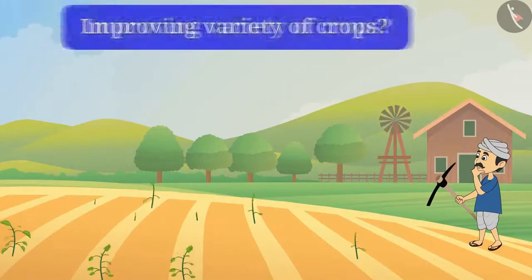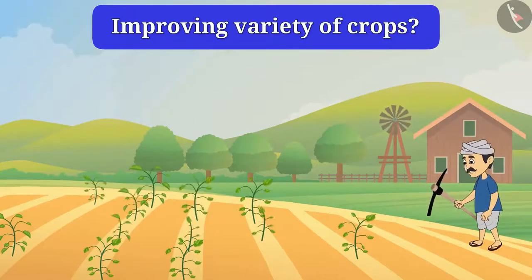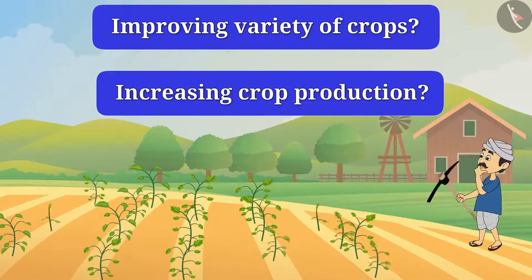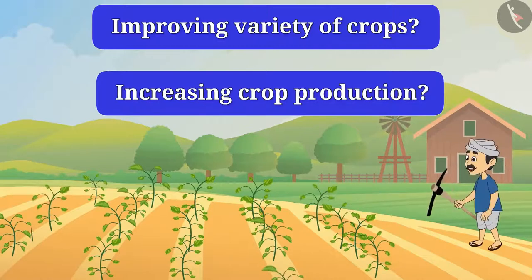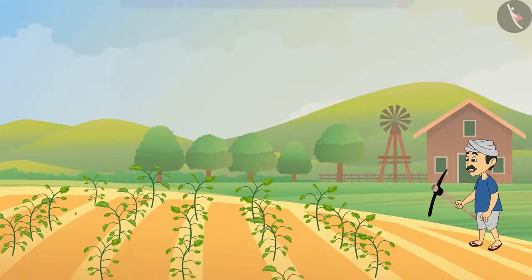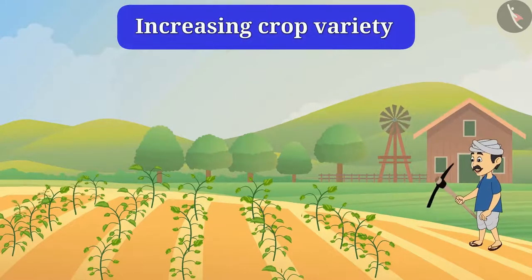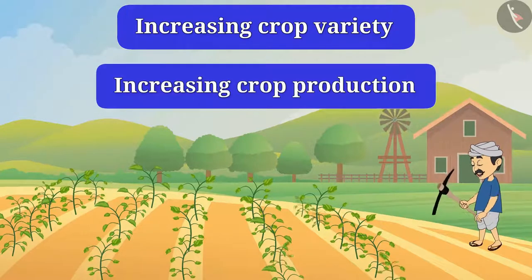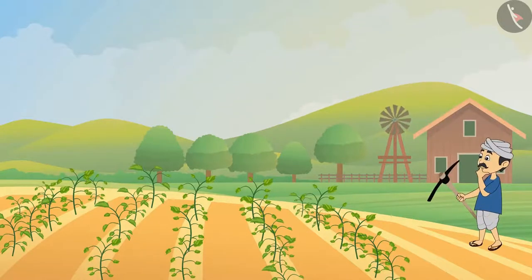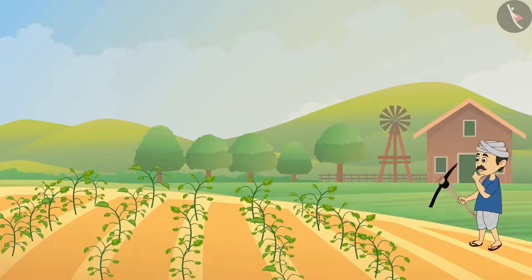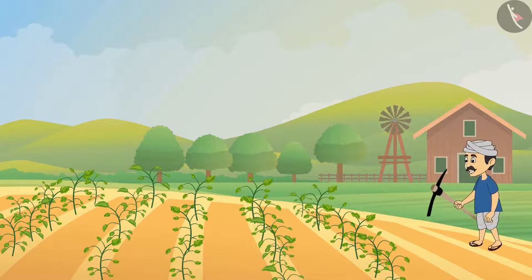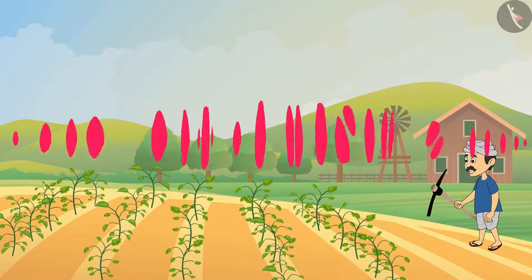How can it be done? By improving variety of crops? By increasing crop production? Yes, crop improvement can be done by increasing crop variety and production. Can it also be done by protecting the crop? Yes, crop improvement can also be done by protecting the crop.